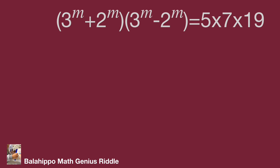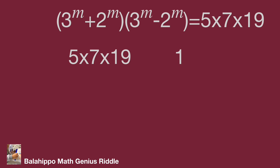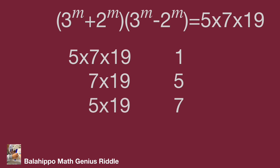Since M is an integer, 3 power M plus 2 power M is greater than 3 power M minus 2 power M. Also, since 3 power M plus 2 power M is greater than 0, there is no negative value for this quantity. So the factor pairs (larger times smaller) for 665 could be: 665 and 1, or 133 and 5, or 95 and 7, or 35 and 19. Let's go further for each condition one by one.